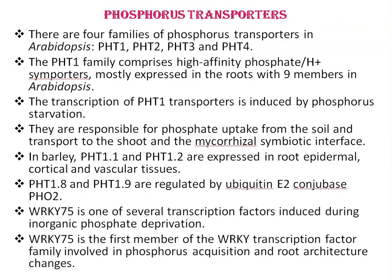First, we will discuss phosphorus transporters. There are four families of phosphorus transporters in Arabidopsis: PHT1, PHT2, PHT3, and PHT4. The PHT1 family comprises high affinity phosphate-proton symporters, mostly expressed in the roots — nine members in Arabidopsis, 13 members in rice, six members in maize, and eight members in barley. Barley phosphate transporters are the best characterized among all crops. The transcription of PHT1 transporters is induced by phosphorous starvation.